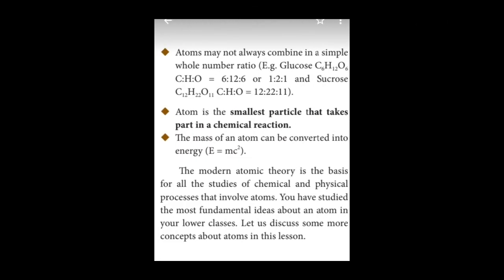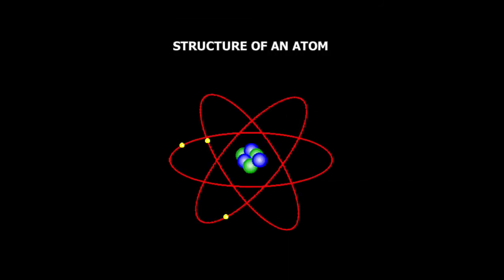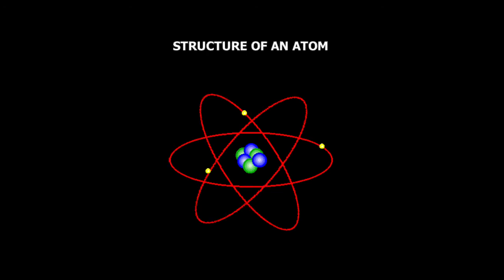Postulate number 6: atom is the smallest particle that takes part in a chemical reaction. It means the subatomic particles — that is proton, neutron and electron — will not take part in the chemical reaction individually. The atom as a whole will take part in a chemical reaction.